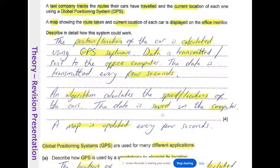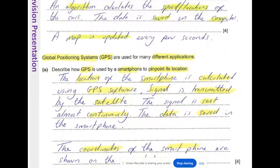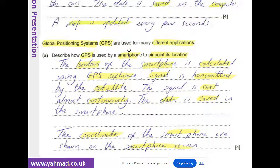Another question: Global positioning systems are used for many different applications. Describe how GPS is used by a smartphone to pinpoint its location. Answer: The location of the smartphone is calculated using GPS software. Signals are transmitted by satellites almost continuously. The data is saved in the smartphone and the coordinates of the smartphone are shown on the screen. These are the sorts of answers you would be expected to write for these questions.